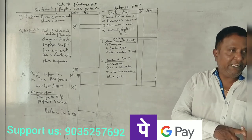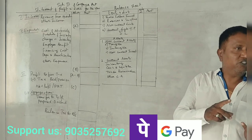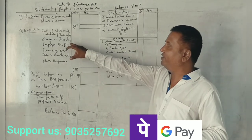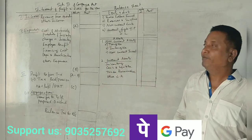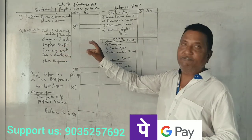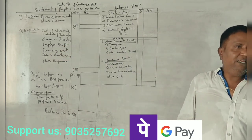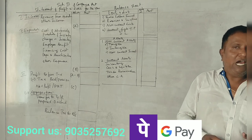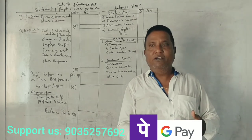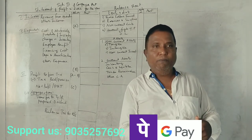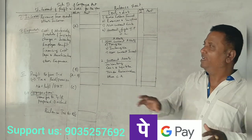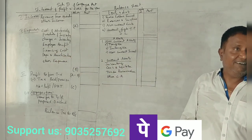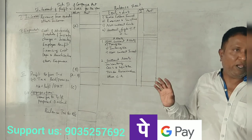Inventory includes stock of raw material, stock of work in progress, and stock of finished goods — all three together we call inventory. Next is employee benefit expense: one company's human resources — employees. This includes salaries, wages, bonus, and PF. These are employee benefits.